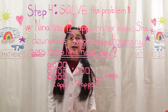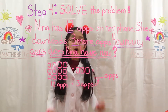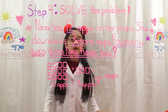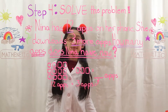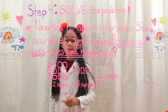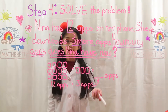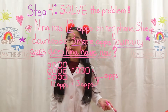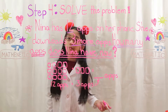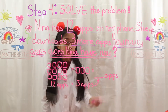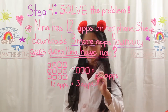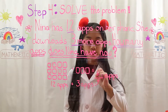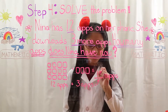Step 4 — the step that you've all been waiting for — solve the problem. 12 apps plus 3 apps equals blank apps. But we know that 12 plus 3 equals 15, so 12 apps plus 3 apps equals 15 apps.